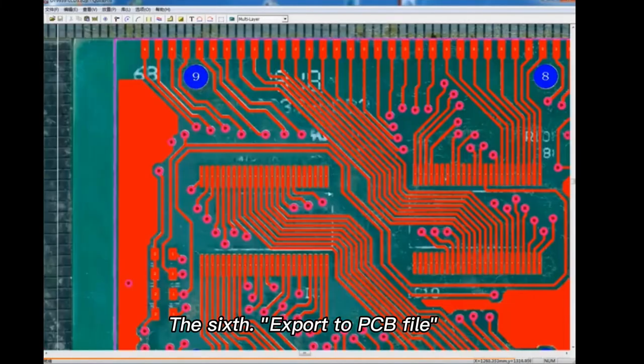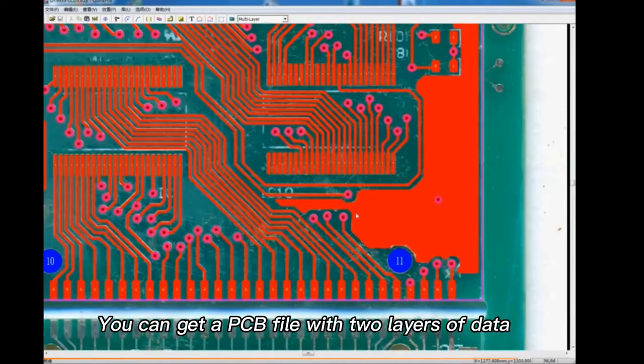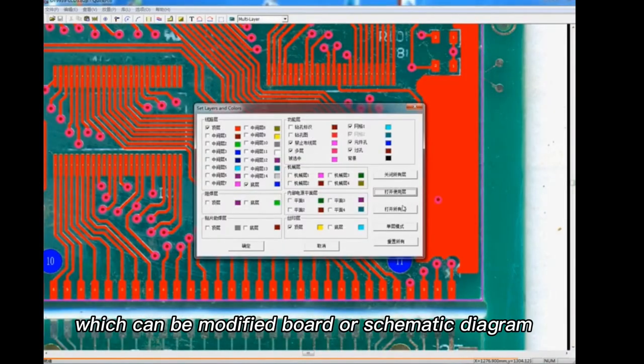The sixth step: export to PCB file. You can get a PCB file with two layers of data, which can be modified board or schematic diagram.